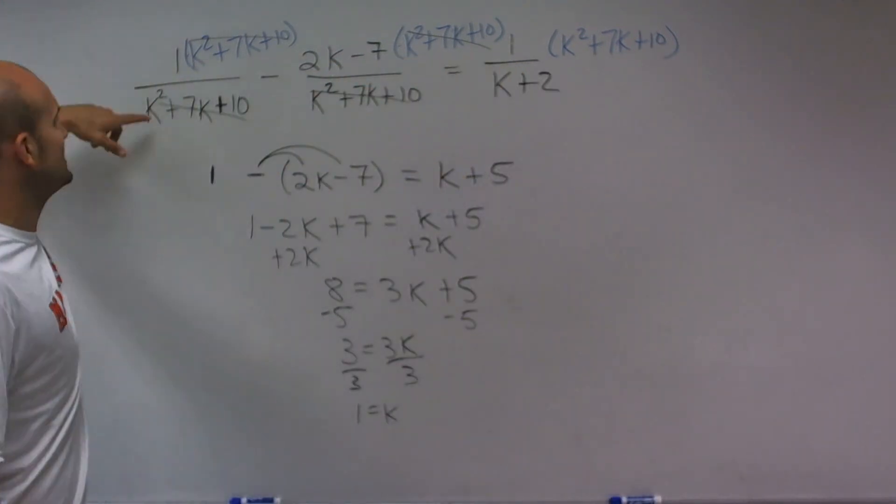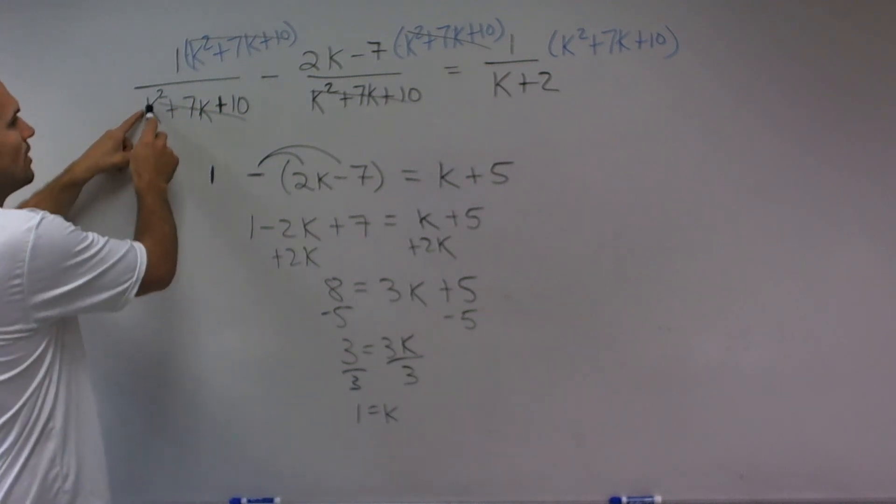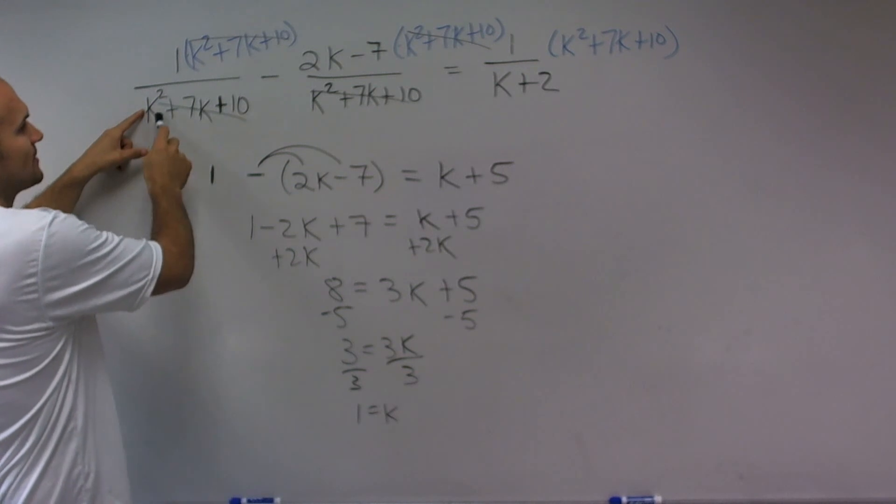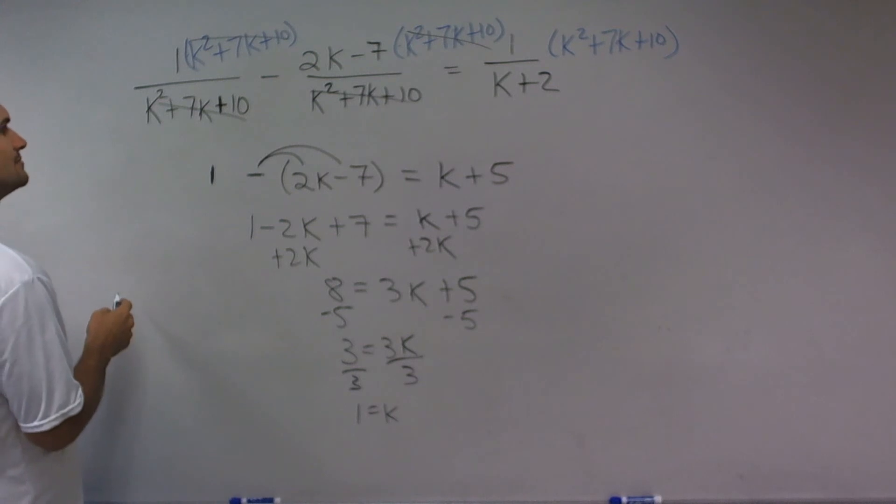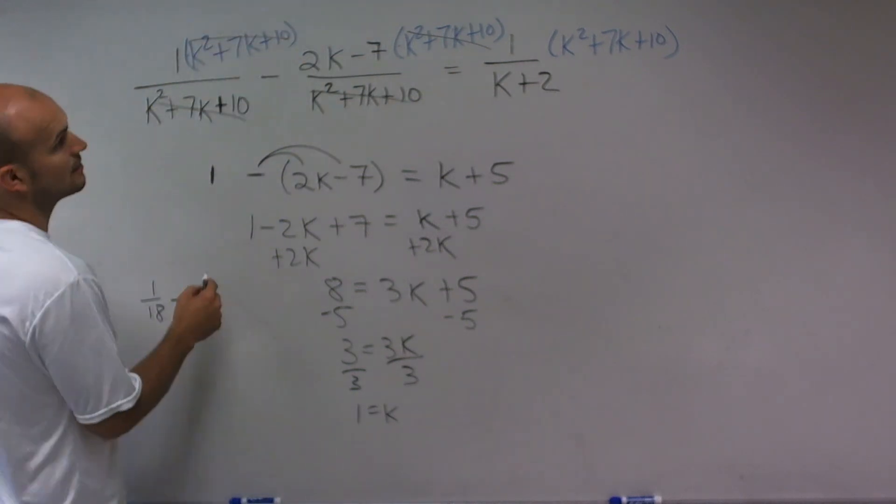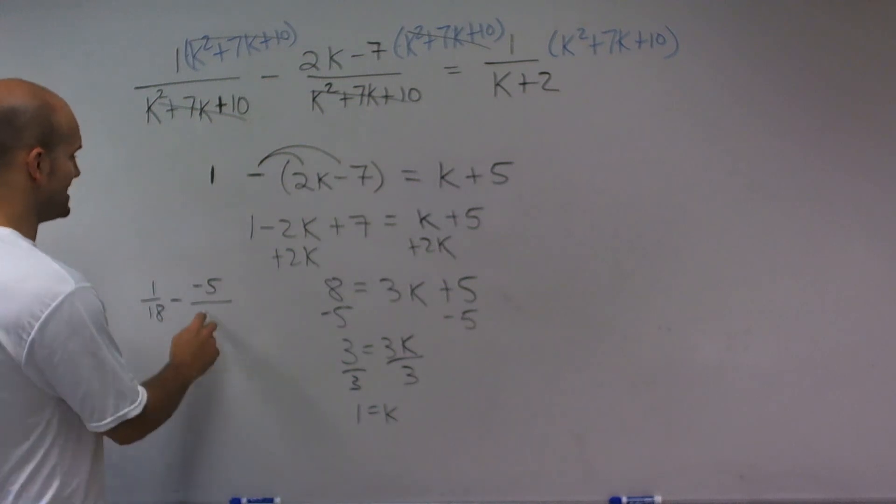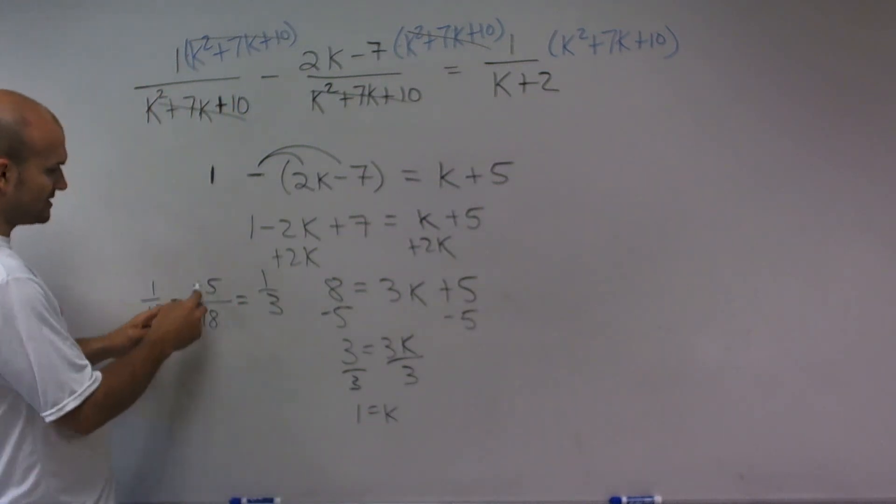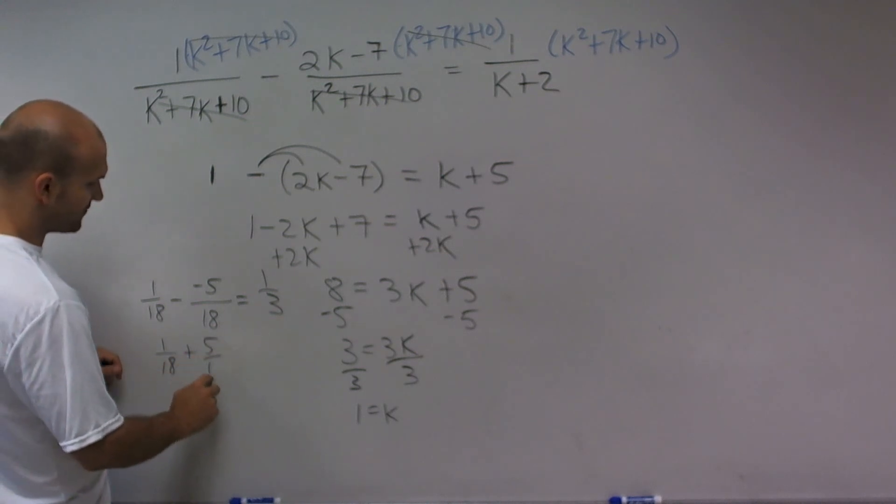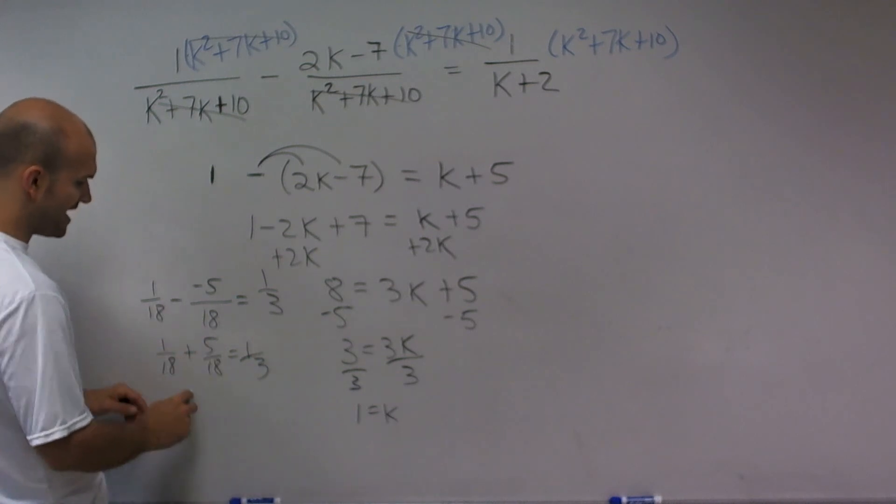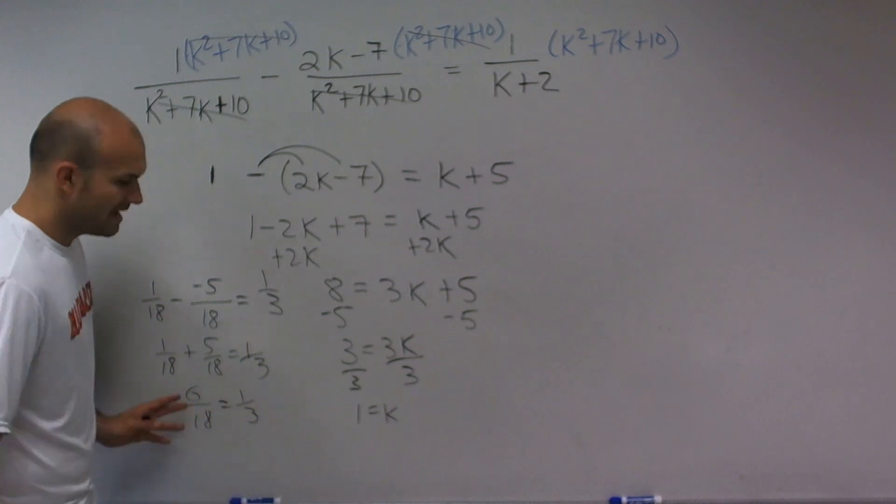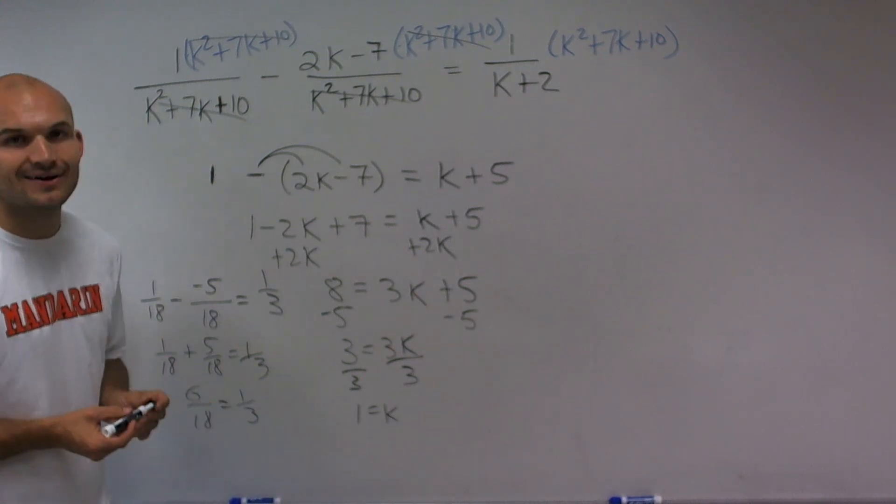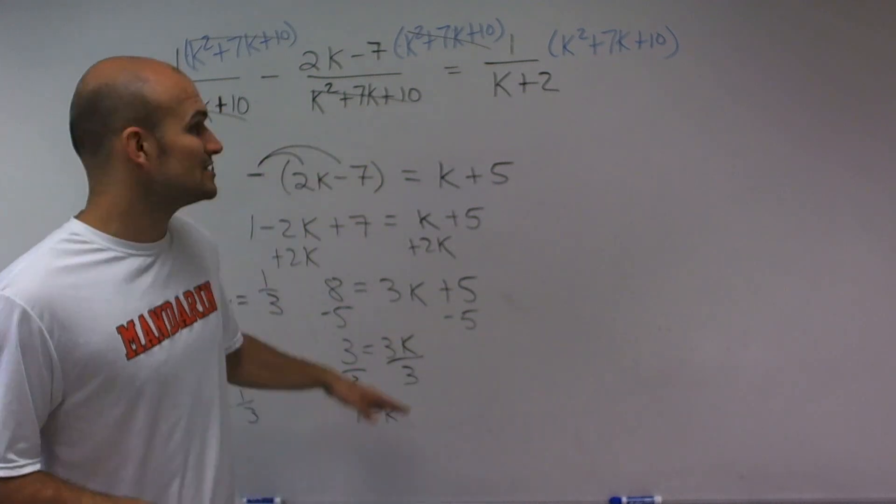So let's plug in our solution 1 into this first part. So 1 squared would be 1 plus 7 times 1 is 7 plus 10 is going to be 18, right? Yes. So I have 1 over 18 minus 2 times 1 is 2 minus 7 is, so it would be 2 minus 7, which would be negative 5, over, again that's going to be 18, equals 1 over 1 plus 2 is 1 third. So now I need to take a look at this, and really a double negative is going to be 1 over 18 plus 5 over 18 equals 1 third. Well, 1 plus 5 is going to be 6 over 18 equals 1 third. And is 6 over 18 equal to 1 third? Yeah, it is. When you reduce it down, you're going to get 1 third. So therefore, this is going to be our solution for this equation. Thanks.